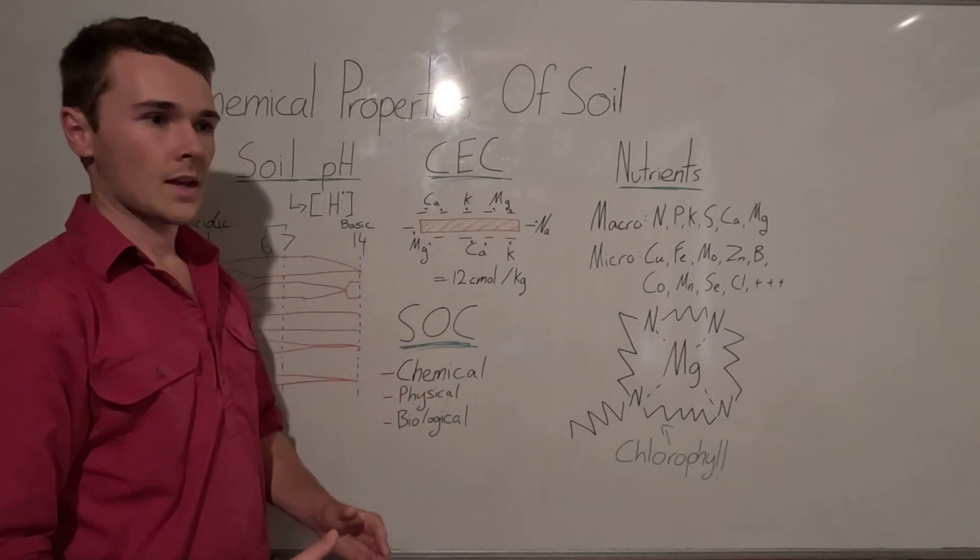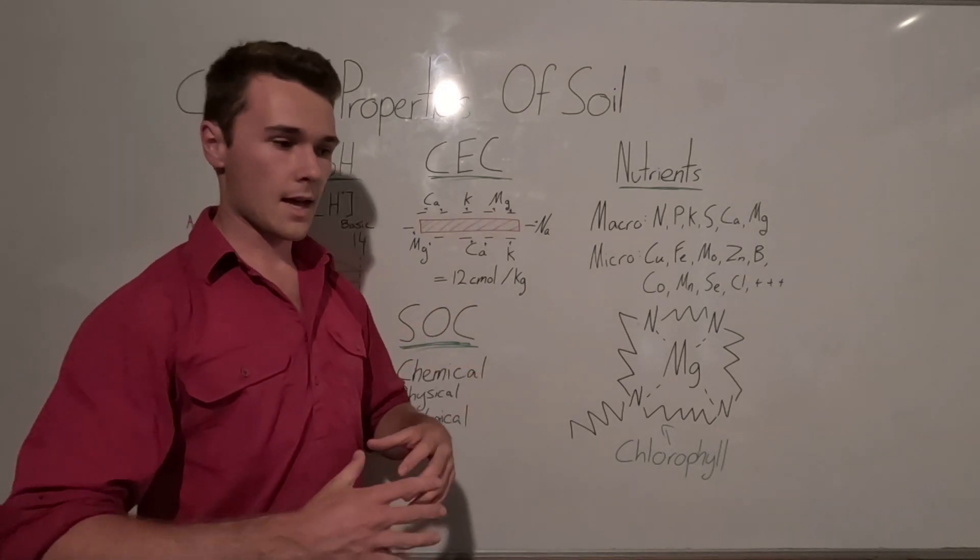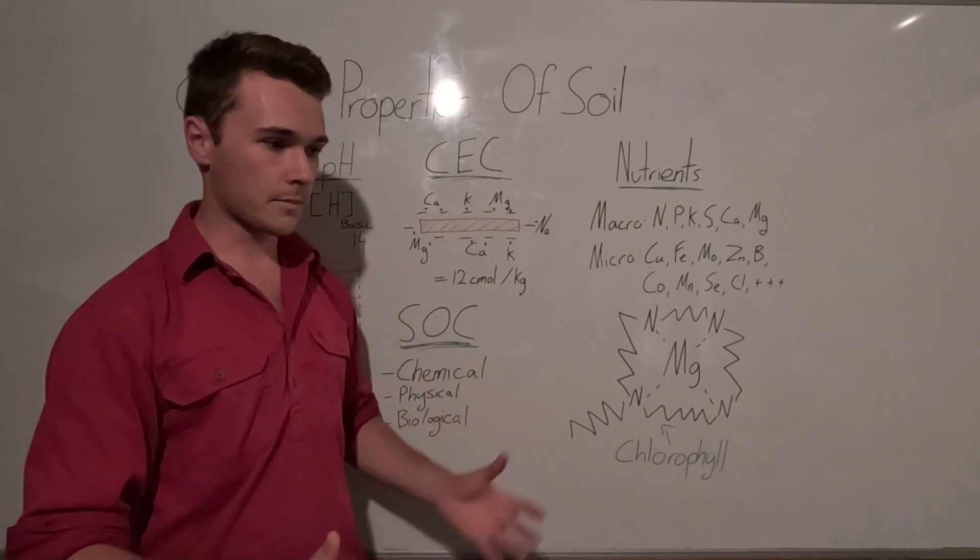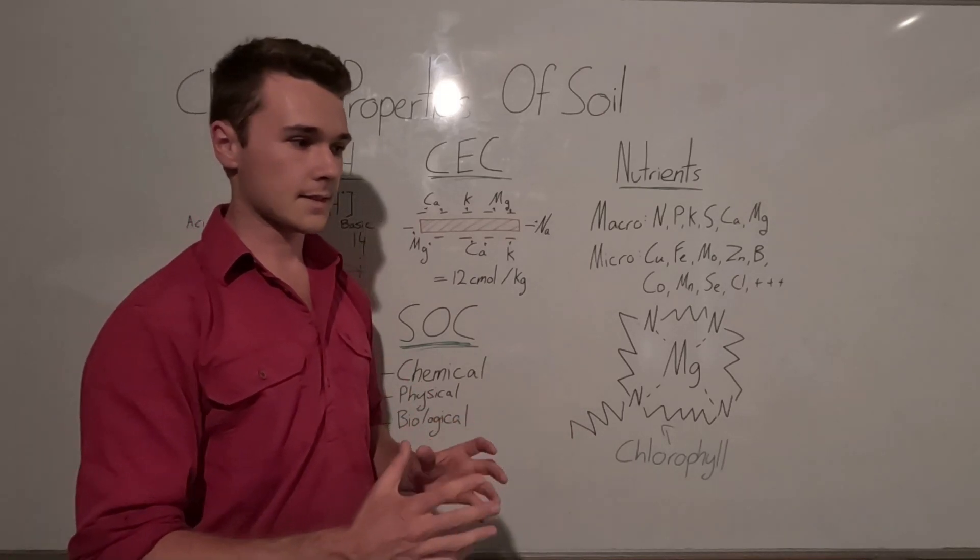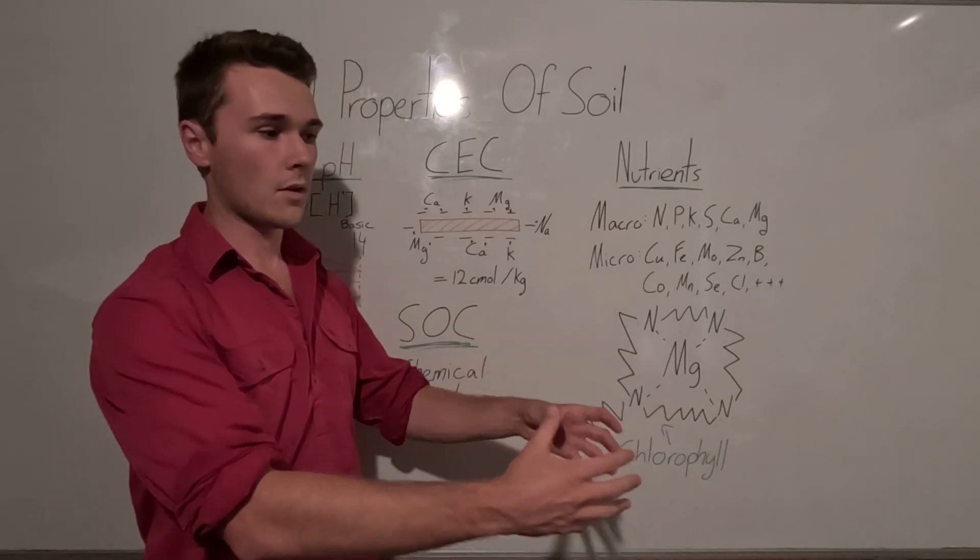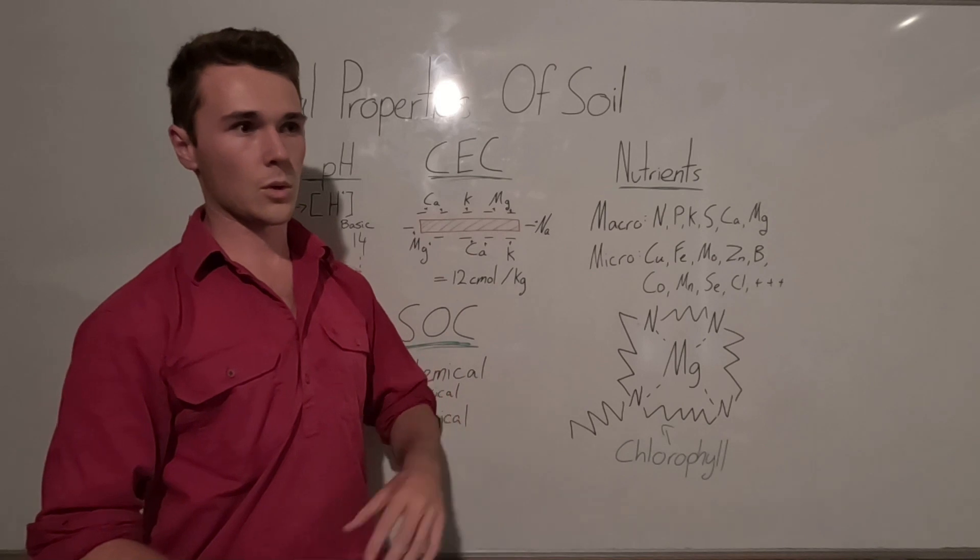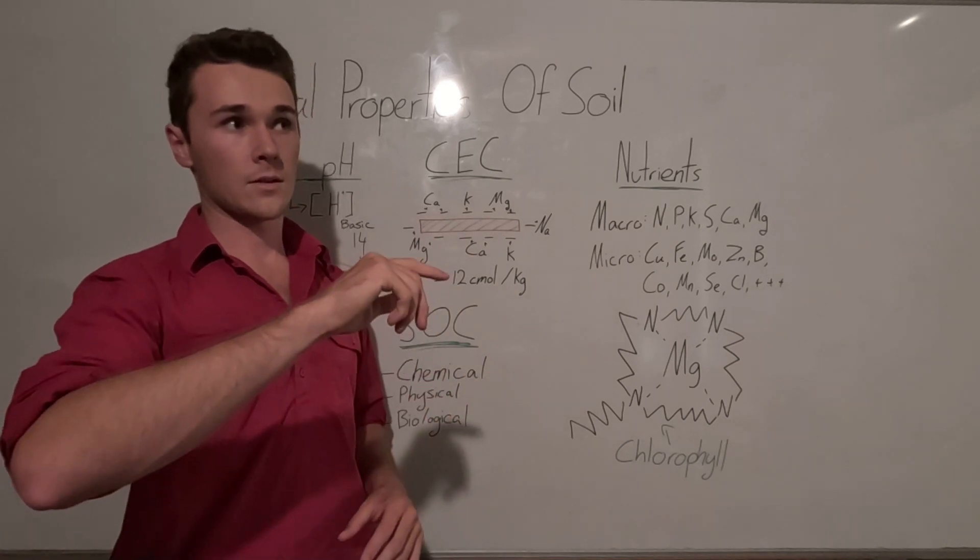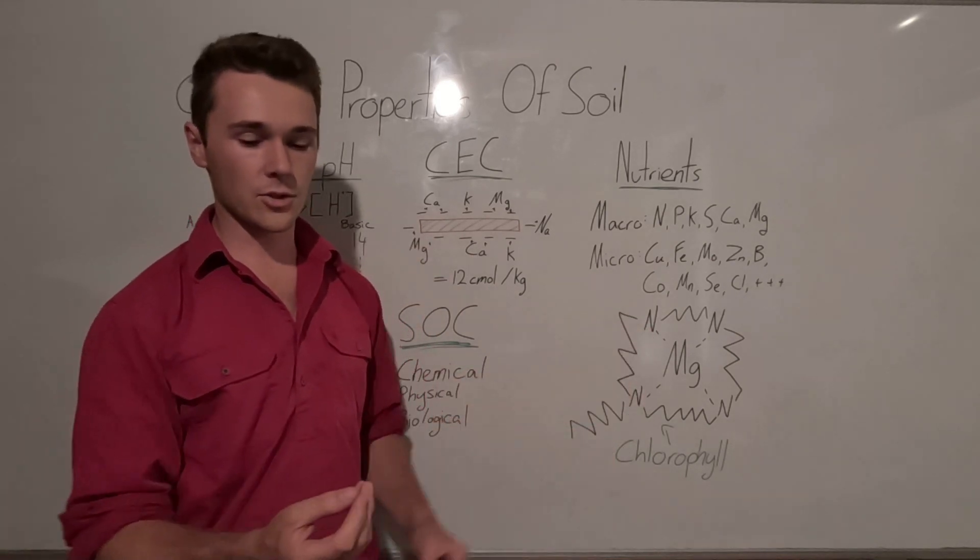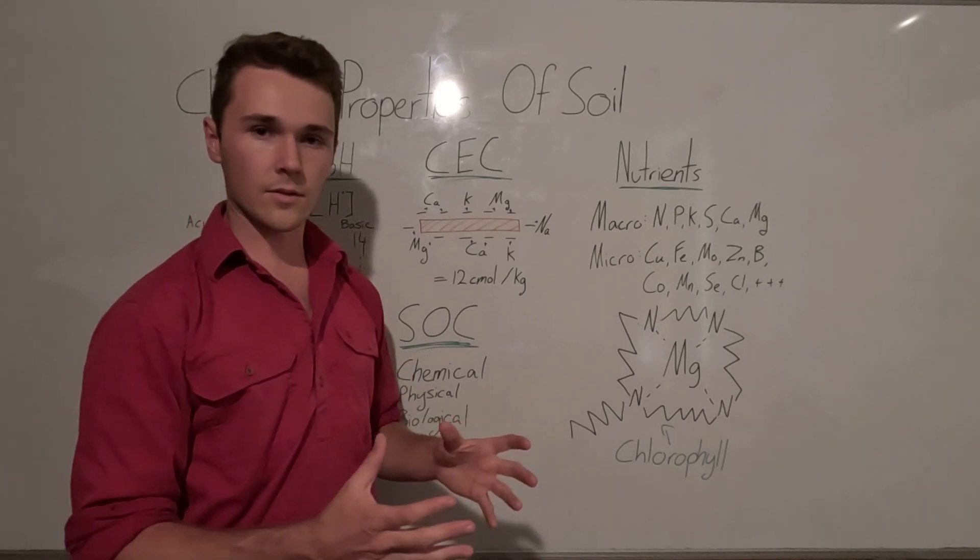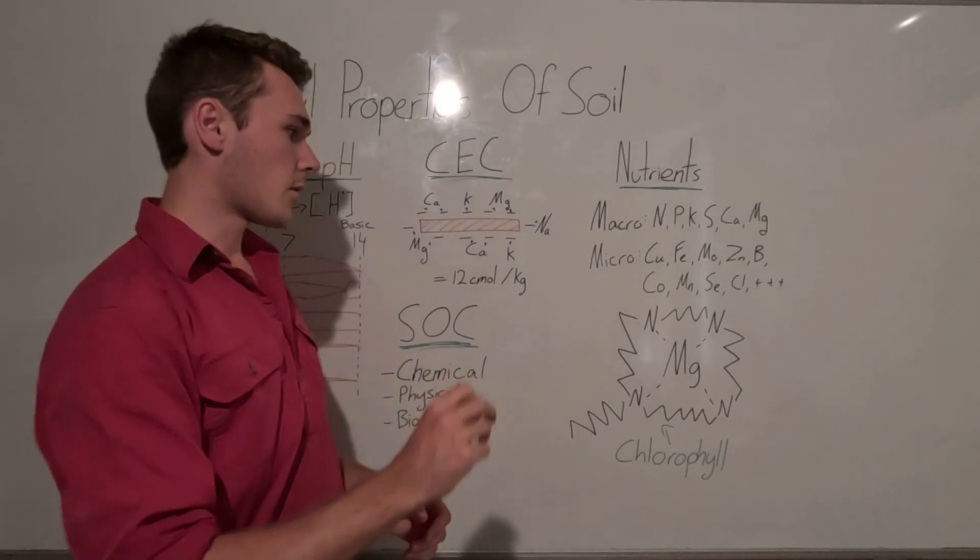And so this is usually expressed in centimoles. Mole is just a number, similar to saying like having a dozen eggs. One mole is a pretty large number, but it's just saying that there's that many of this particular thing. So our mole itself is I think 6.02 times 10 to the 23. That's a massive number and it's usually used to describe elements and things of those chemical natures.